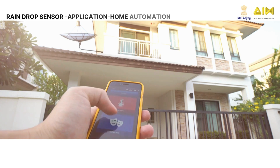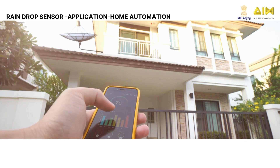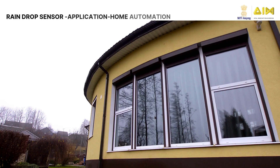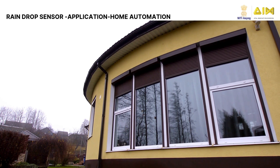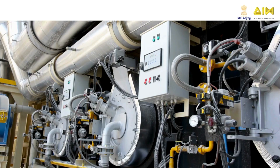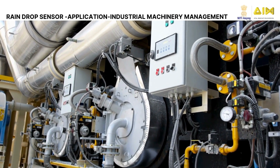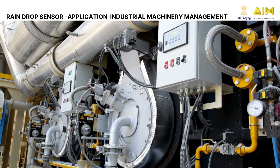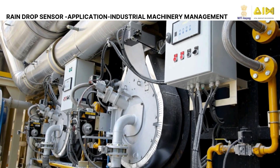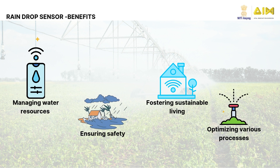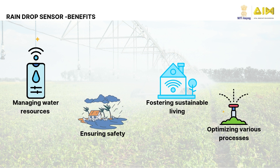It supports home automation — it closes windows or skylights when rain is detected, protecting interiors from water damage. It also detects water leaks that may damage sensitive machinery or electrical systems, and can trigger automated shutdowns to protect machinery. To summarize, the benefits of a raindrop sensor include managing water resources, ensuring safety, helping in following a sustainable lifestyle, and optimizing various processes across different applications.